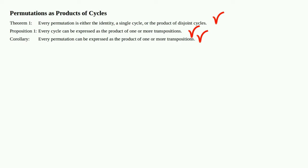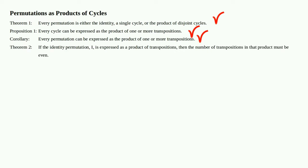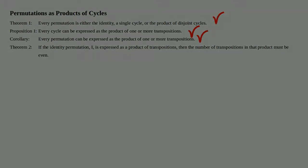Theorem 2: If the identity permutation i is expressed as a product of transpositions, then the number of transpositions in that product must be even. This may seem obvious after observing the proof of the corollary we just did, but the proof of Theorem 2 will come in the next video in this series, so stay tuned.